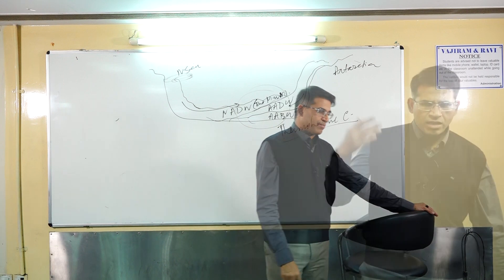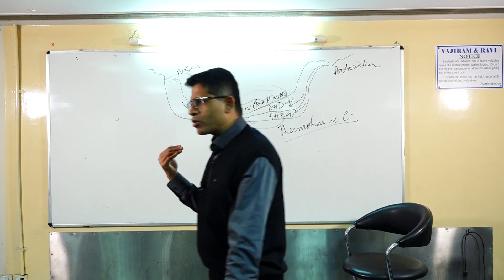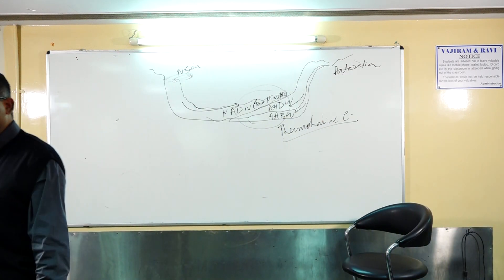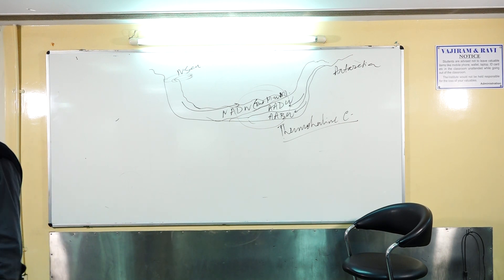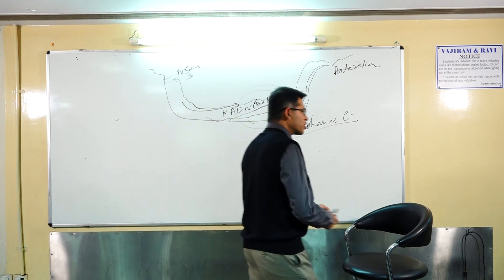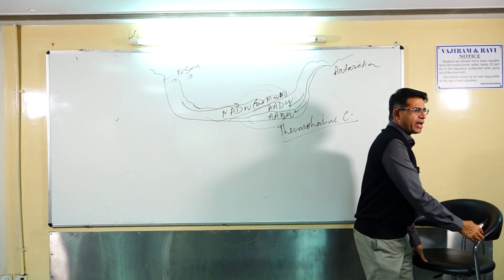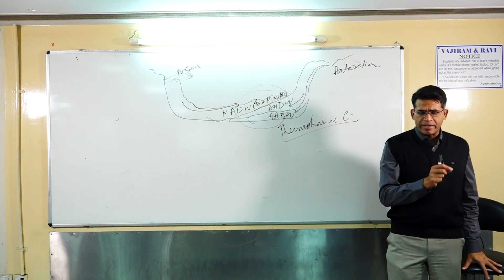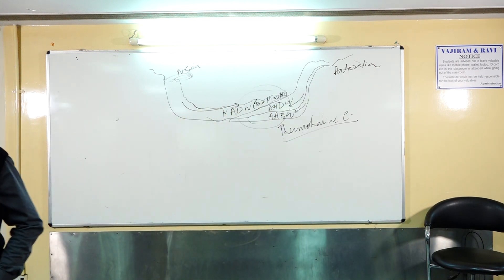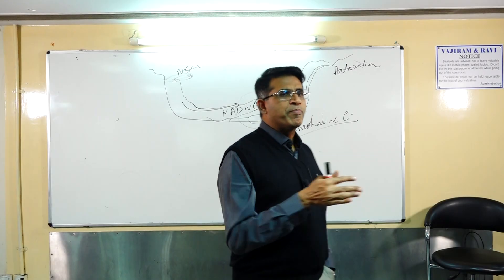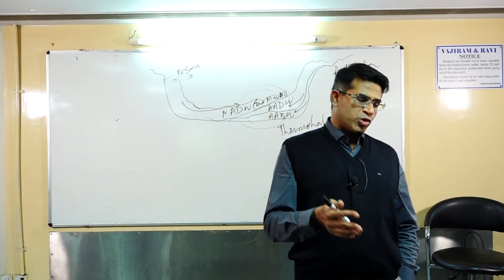The next is T-S Diagrams, this is a pretty old question they can ask you. What is T-S Diagrams? Essentially it is temperature-salinity diagram. It is a graphical representation of the relationship between temperature and salinity of the oceans.